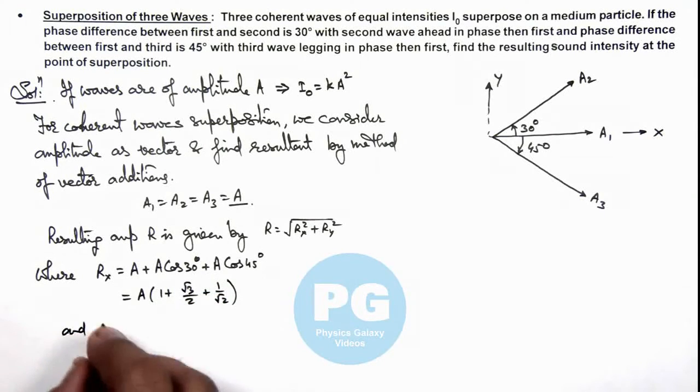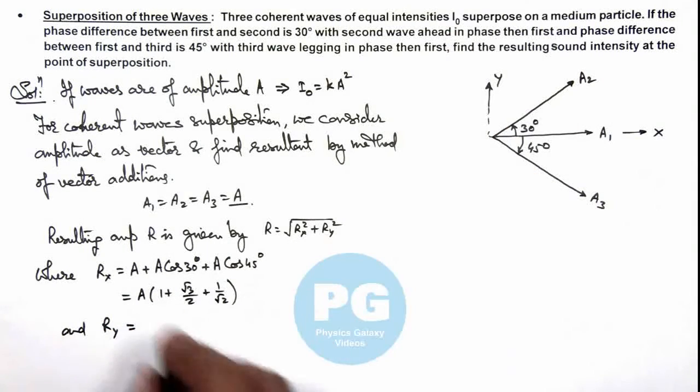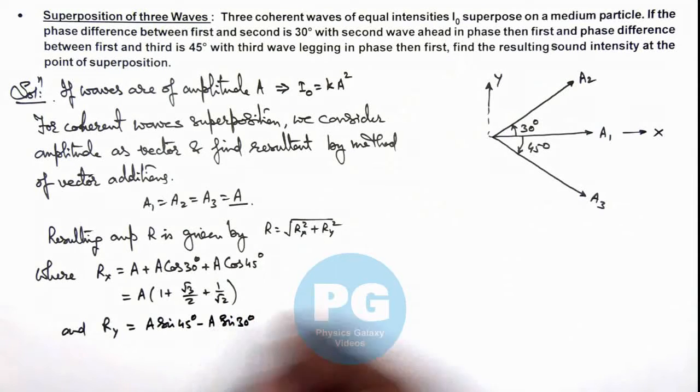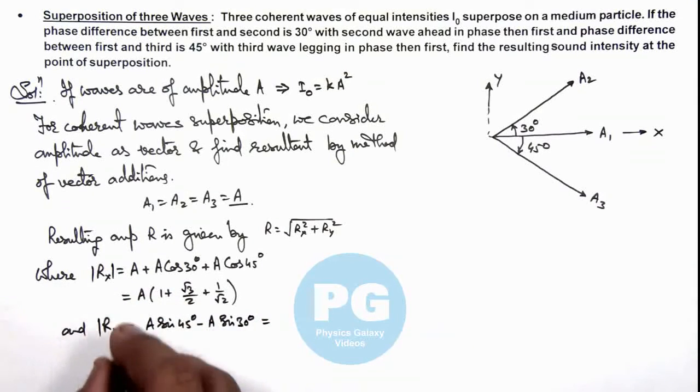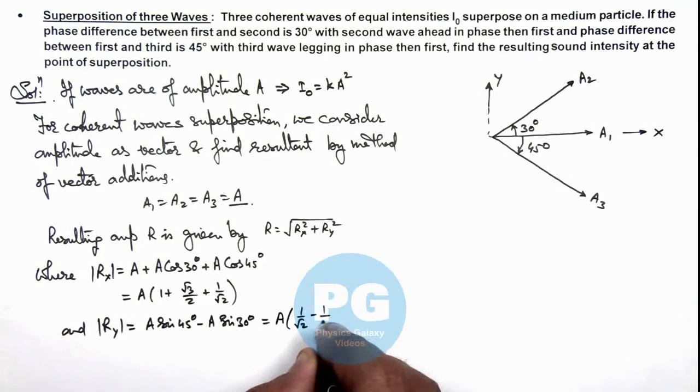Rᵧ, the component of resulting amplitude in y direction, we can write as A sin 45° minus A sin 30°, and it'll be in negative y direction. But here we are talking only about amplitude so it won't make any difference—we can also put magnitude of Rₓ and Rᵧ. This is A multiplied by (1/√2 - 1/2).